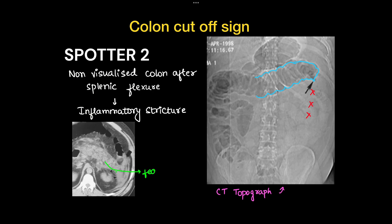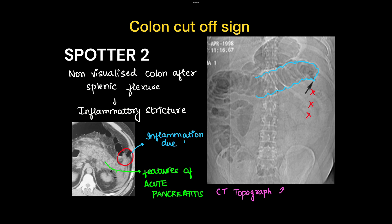This is the same case. Here you can see features of acute pancreatitis. The leaked pancreatic enzymes cause inflammation in the colon, hence an inflammatory stricture will be seen. Inflammation due to leaked pancreatic enzymes into the peripancreatic space is causing the stricture.